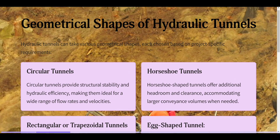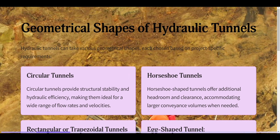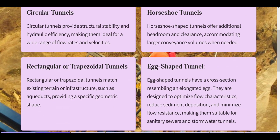Geometrical shapes of hydraulic tunnels. Hydraulic tunnels can take various geometrical shapes, each chosen based on project-specific requirements. Circular tunnels provide structural stability and hydraulic efficiency, making them ideal for a wide range of flow rates and velocities. Horseshoe-shaped tunnels offer additional headroom and clearance, accommodating larger conveyance volumes when needed.